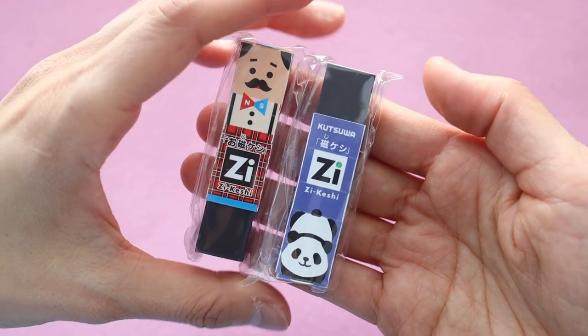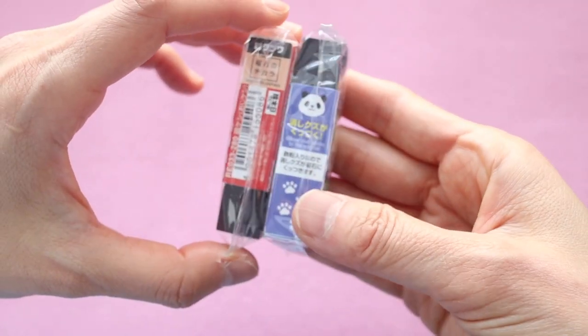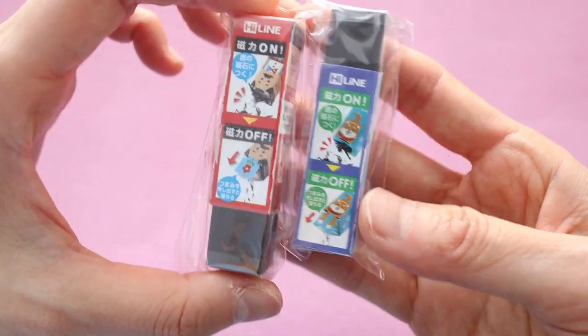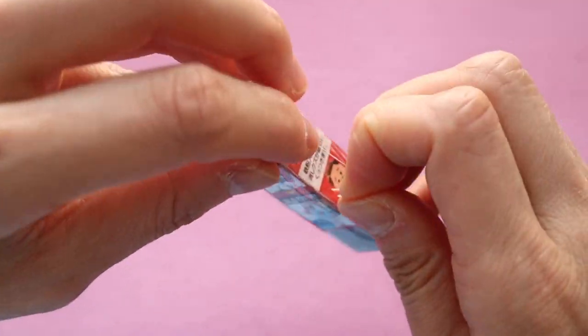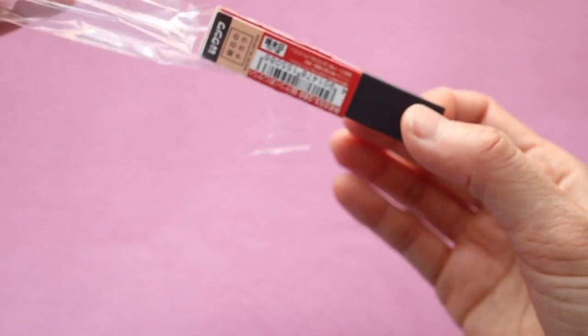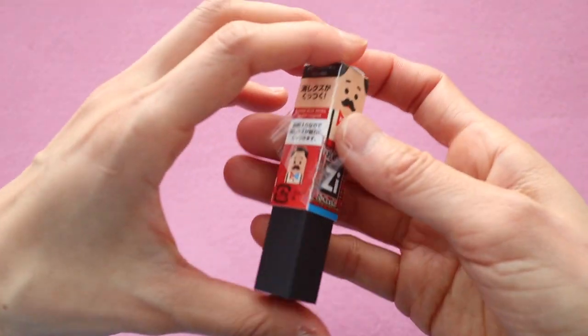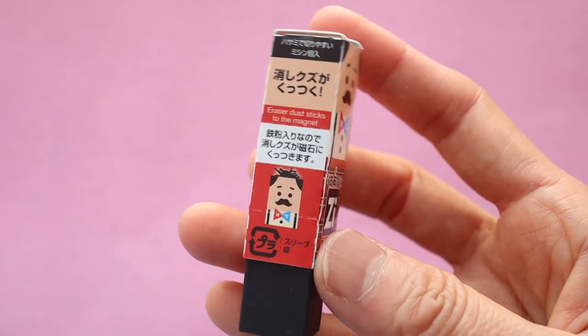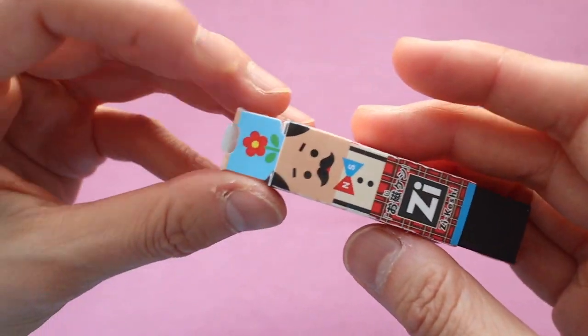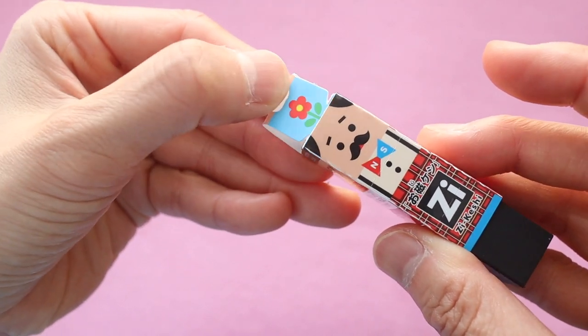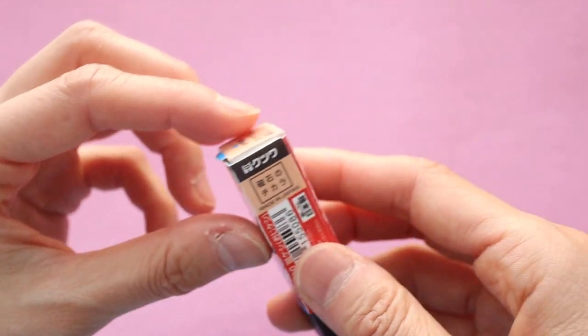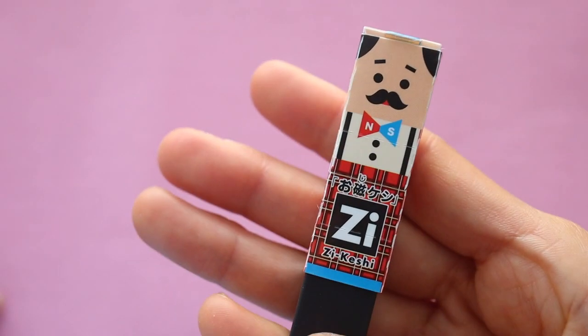Let's start off with the Z-keshi eraser. This is made by the Japanese brand Kutsuwa, and I have two different kinds. The first one is this man with some hair on the sides of his head, but the top of his head is bald. Then you can open it up and a flower pops out. There are various designs of this. I didn't get to choose it. It was just randomly picked out of five different types of erasers.